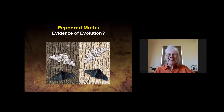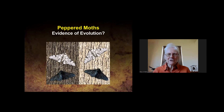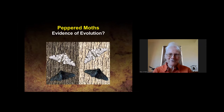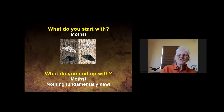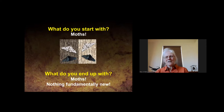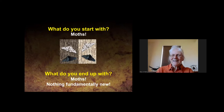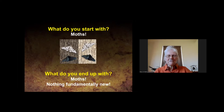What about peppered moths — are they good evidence of evolution? This is one of the classic evidences in textbooks. These moths were around in Great Britain before the industrial revolution when the air was clean and tree bark was light-colored. When coal burning polluted the air, they say there were more dark moths than light ones. But what do you start with? Moths. What do you end up with? Moths — light ones and dark ones. Nothing fundamentally new.